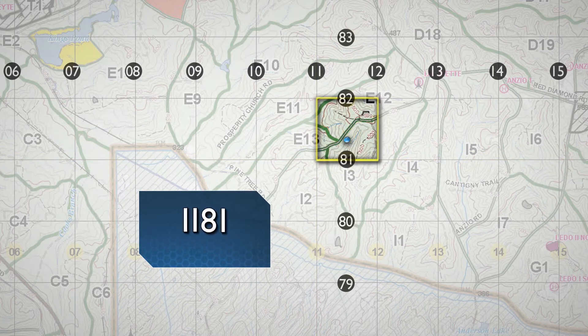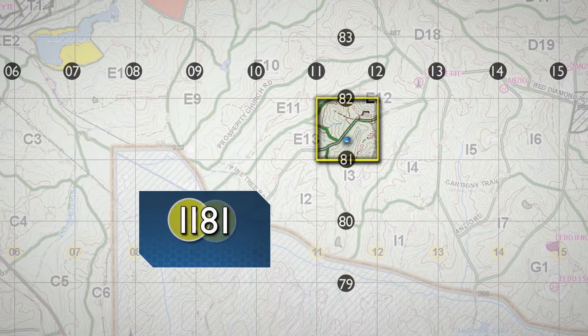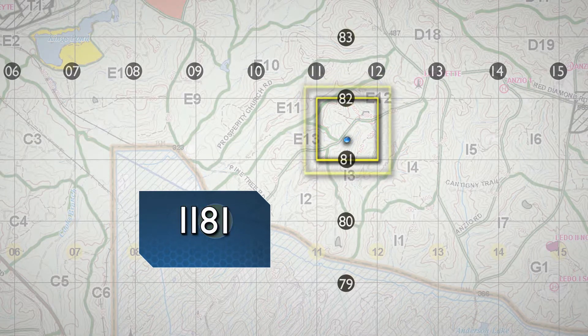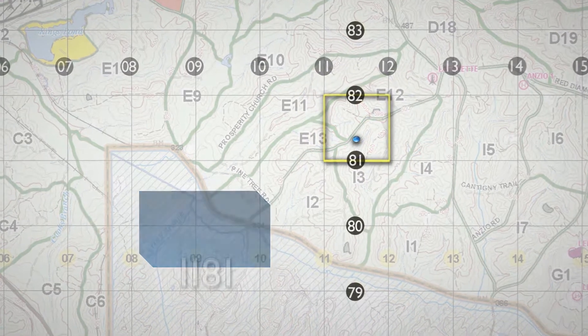The more digits, the more precise the measurement. In the above example, the four digits 1181 identify the 1,000-meter grid square to be used.